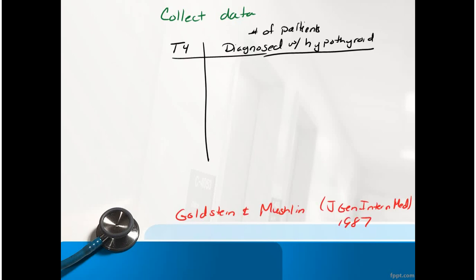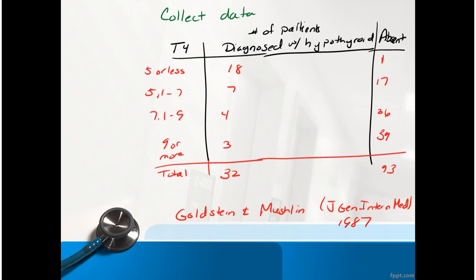The way to do that is to collect data. You're using T4 as a proxy to diagnose whether the individual has hypothyroidism. Now I went to a paper by Goldstein and Mushlin, 1987. This is actually on the web, a discussion of how to develop ROC curves. If you look up ROC curves, you'll find this website - it's like the second hit off Google. A beautiful example.